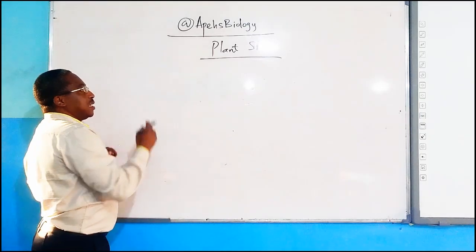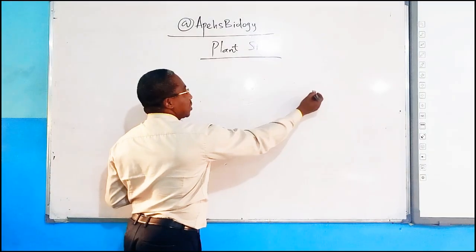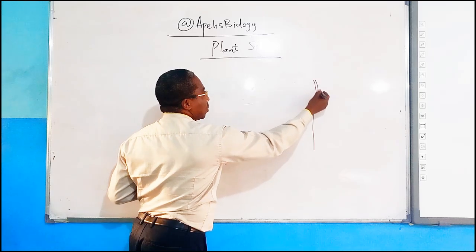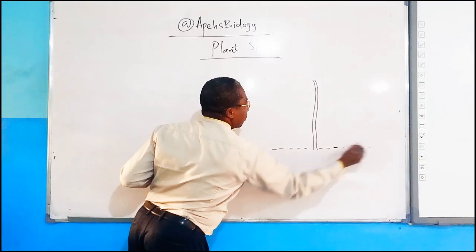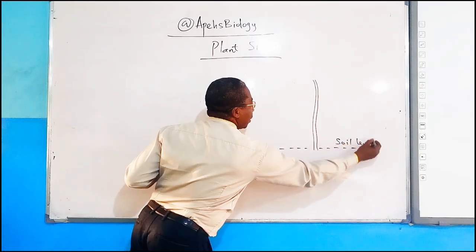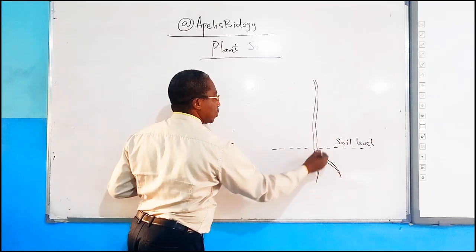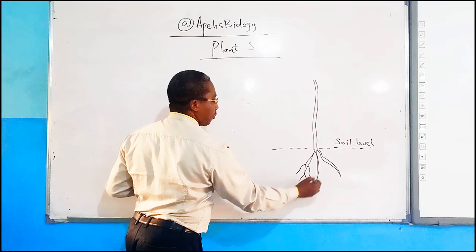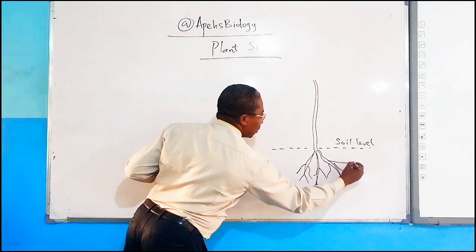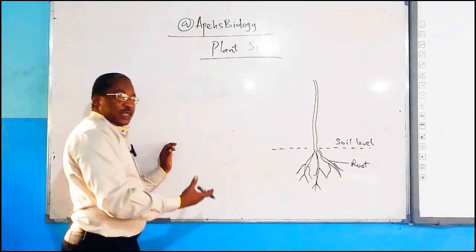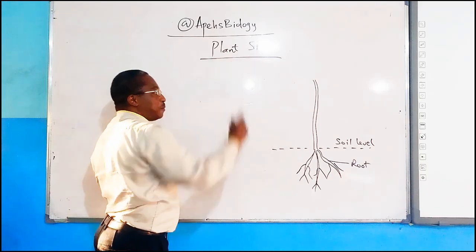First we will look at a typical plant. Any plant you observe — let's present the drawing. A typical plant looks like this. You have a part that grows upward, and we use a dotted line to represent the soil level. Somewhere below that we use this to represent the roots, and then the other fibers that spread out represent the root system. We are dealing with the parts that actually grow above the soil — that's why we are going to talk about the plant stem.